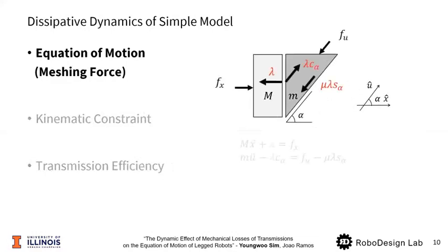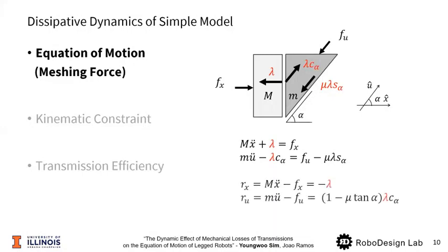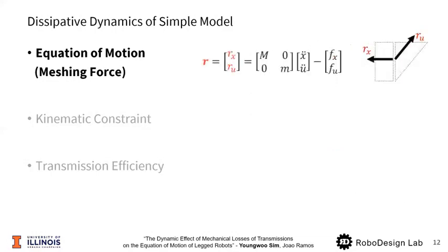The equation of motion of block and the wedge can be arranged as following, which separates forces into two groups, a group with inertial forces and external forces, and the other group of Lagrangian multiplier-dependent forces. Note that the dry friction is proportional to the lambda. And we label these forces as R, meshing forces. For concise notation, we may use a vector form like this.